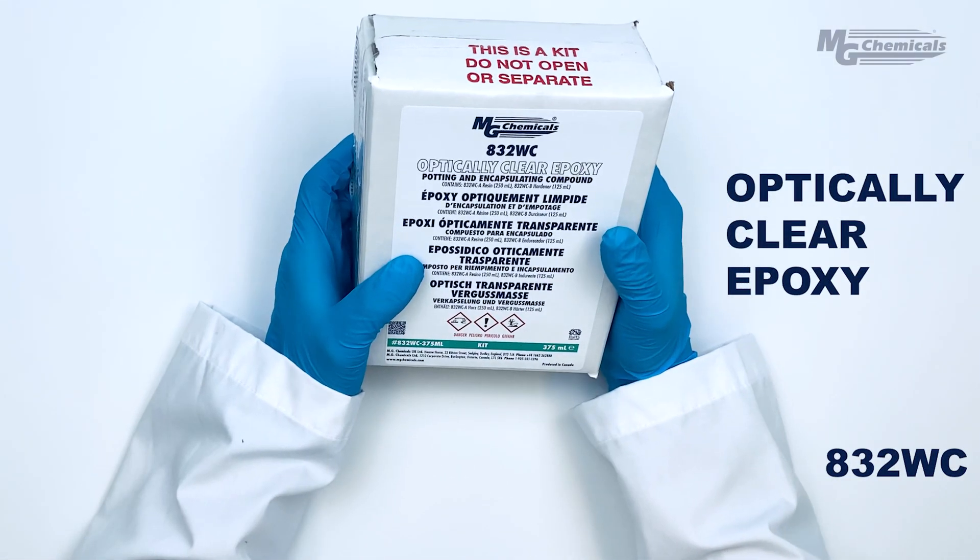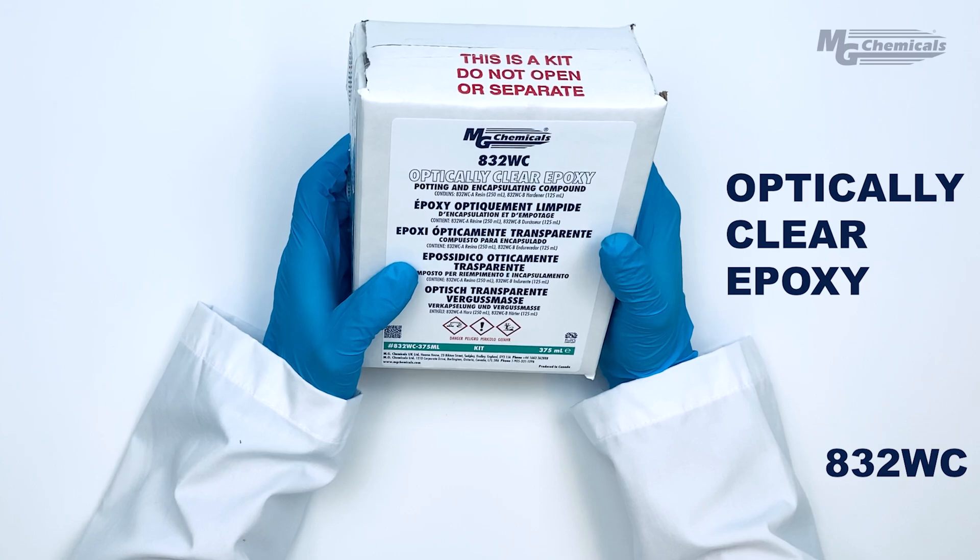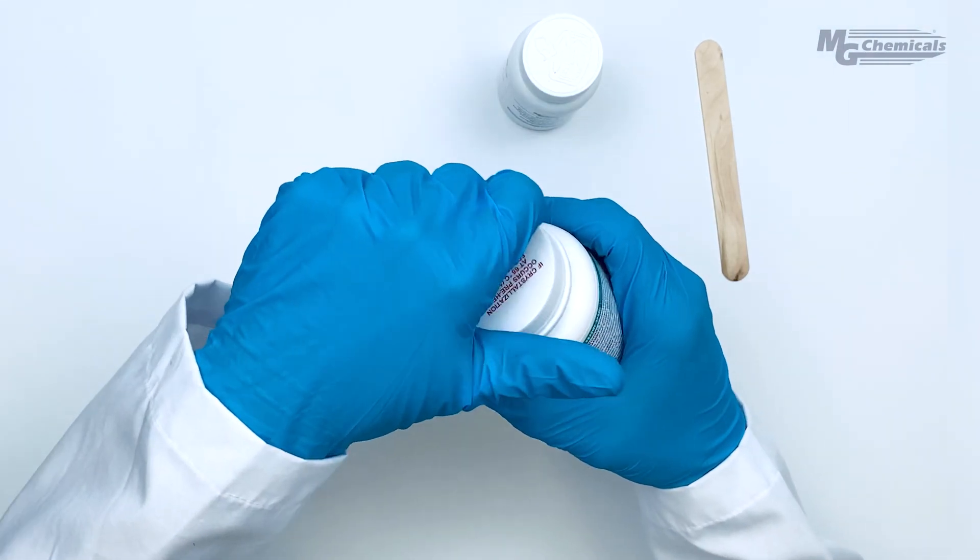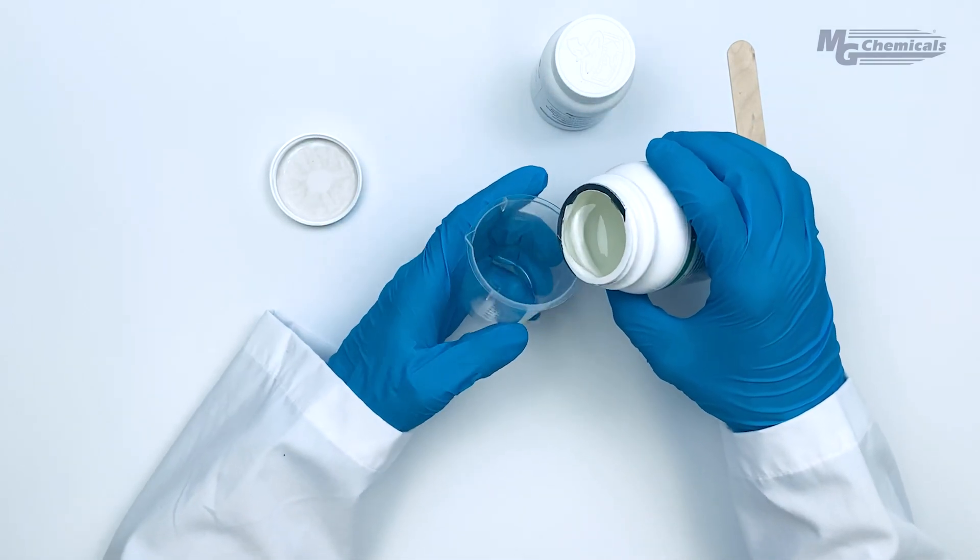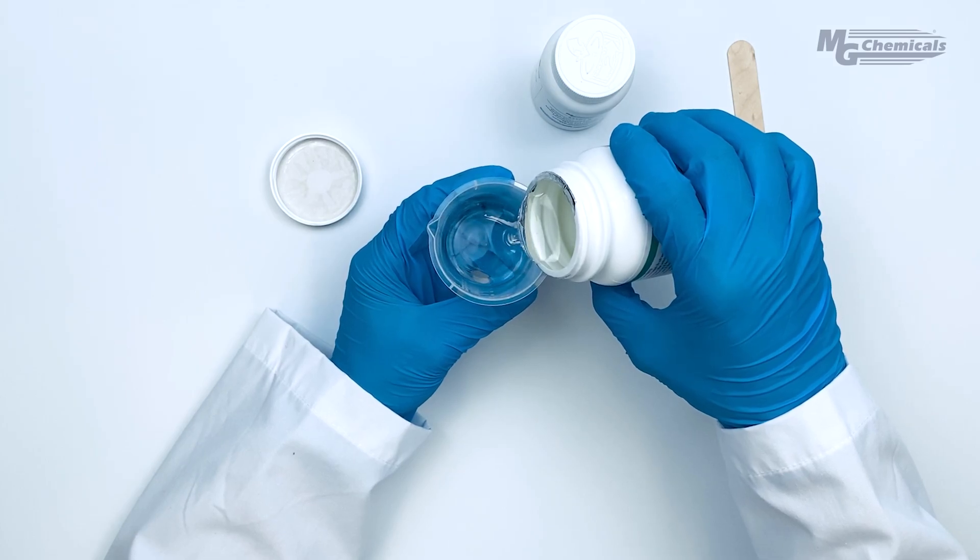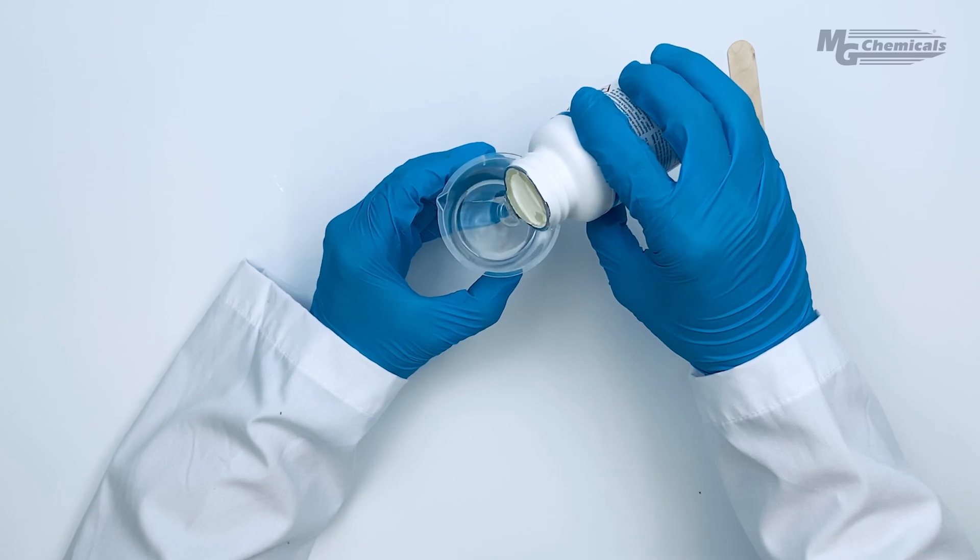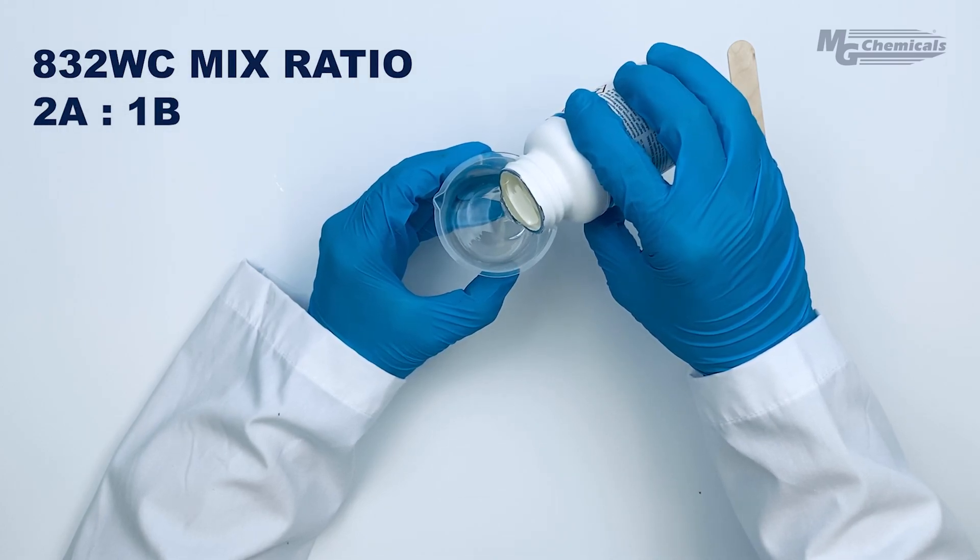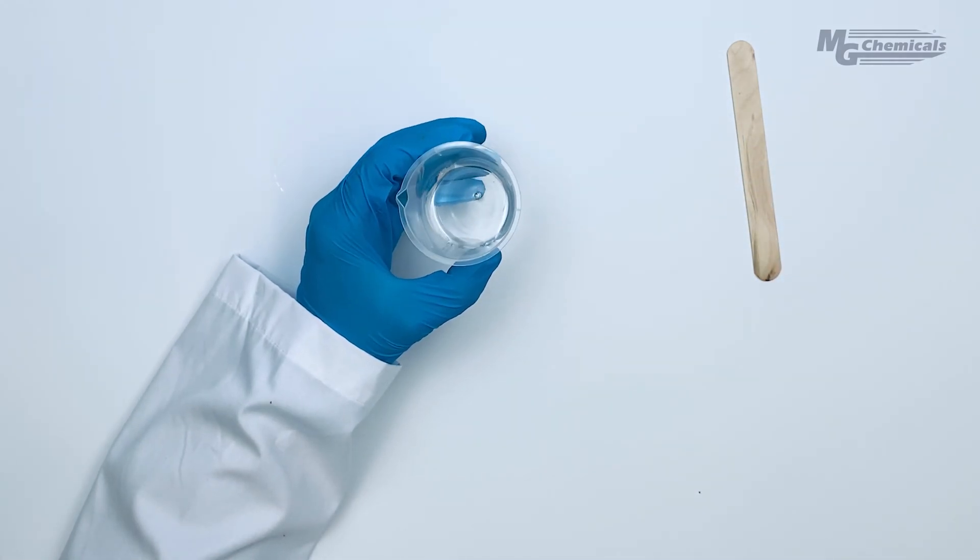For potting I'll use MG's 832WC Optically Clear Epoxy. First, measure the resin component part A into a cup then add the corresponding amount of hardener part B into the cup using the correct mix ratio. For the 832WC the mix ratio is two parts resin to one part hardener by volume.